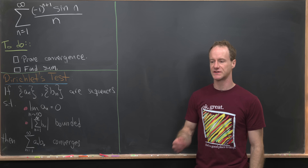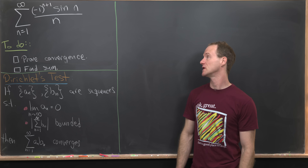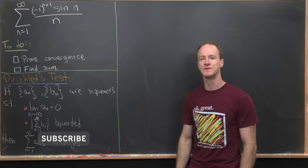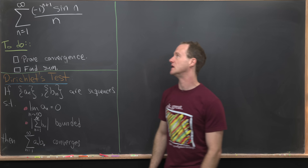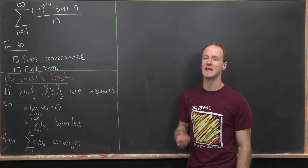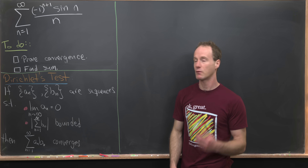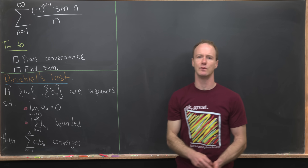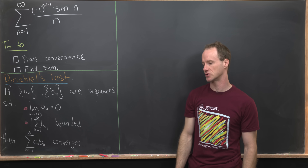Here we're going to look at a nice viewer-suggested problem. Our goal is to evaluate the following infinite series: the sum as n goes from 1 to infinity of minus 1 to the n plus 1 times sine n over n. If we were to erase the sine n, we would have the alternating harmonic series, which we know converges.